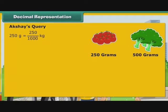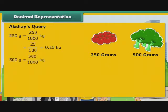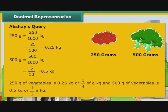Let us now express the vegetables Akshay's mother purchased as kilograms. 250 grams is equal to 250 by 1000 kg, that is equal to 25 by 100 kg, that is equal to 0.25 or 1 by 4 kg. 500 grams is equal to 500 by 1000 kg, that is equal to 5 by 10 kg, that is equal to 0.5 or 1 by 2 kg. So 250 grams of vegetables is 0.25 kg and 500 grams of vegetables is 0.5 kg.